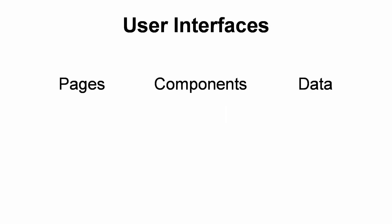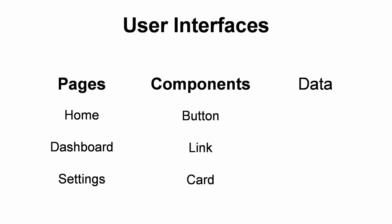According to me, there are three major parts to how user interfaces are built. You have pages — your home page, dashboard page, settings page. These pages are built using components like button, link, card. And then we have data like users, to-dos, settings, which are used to render the whole page.